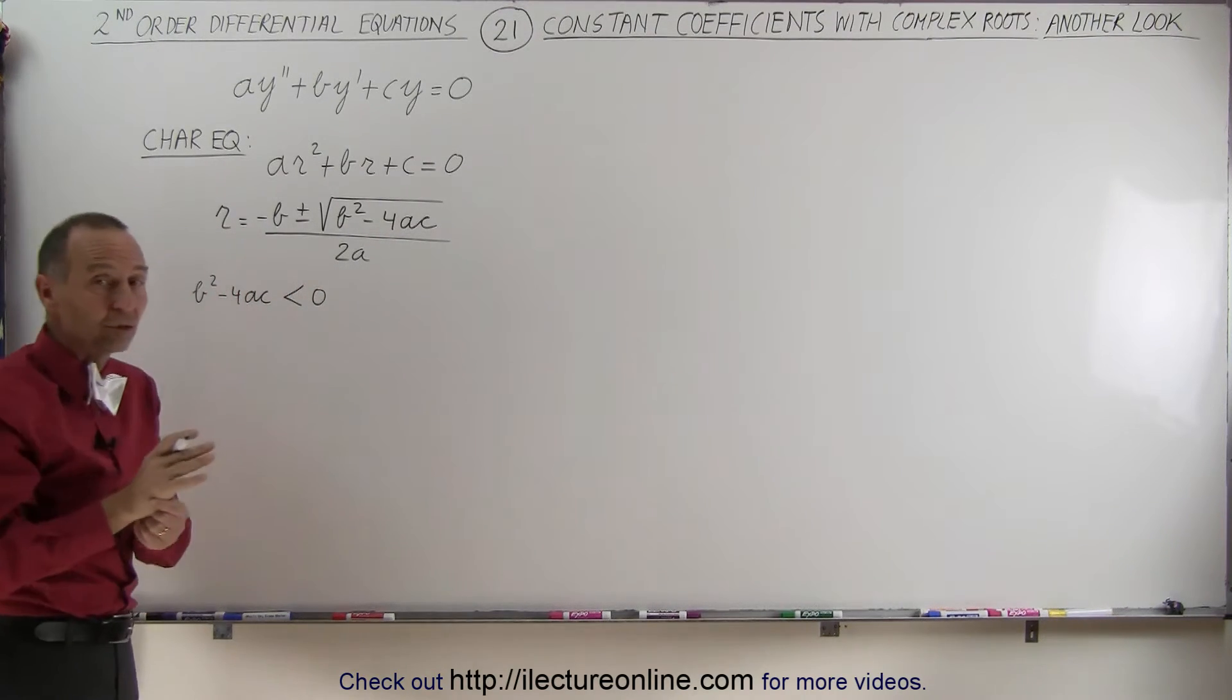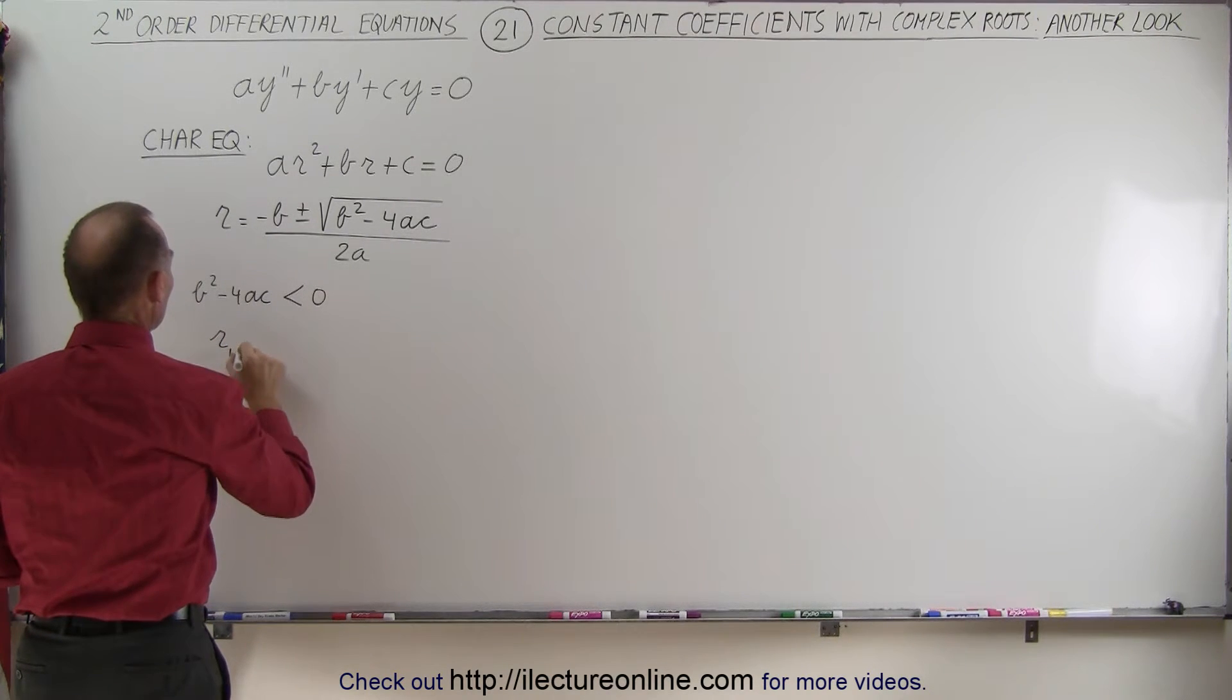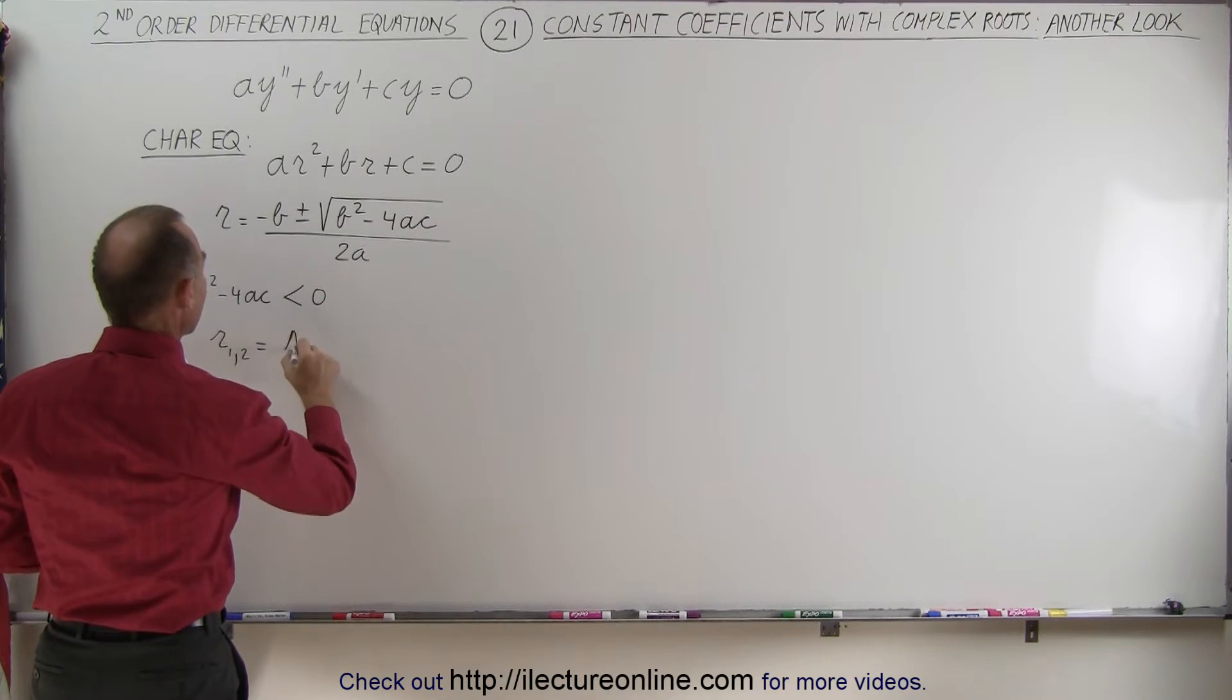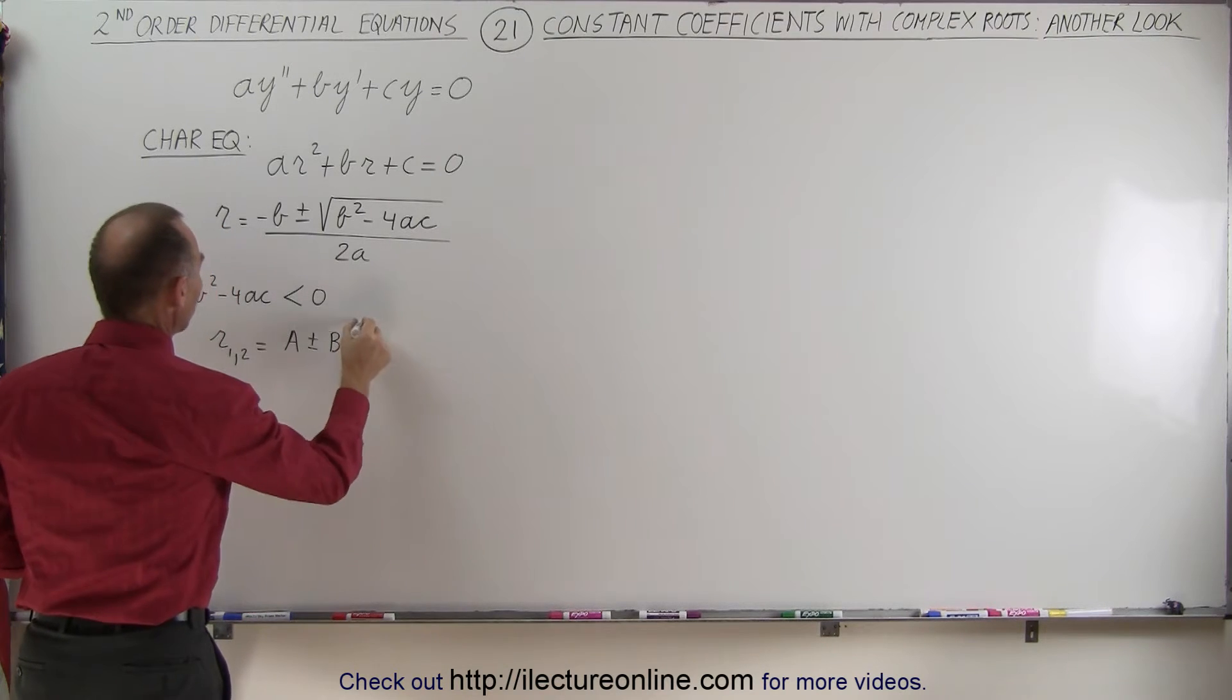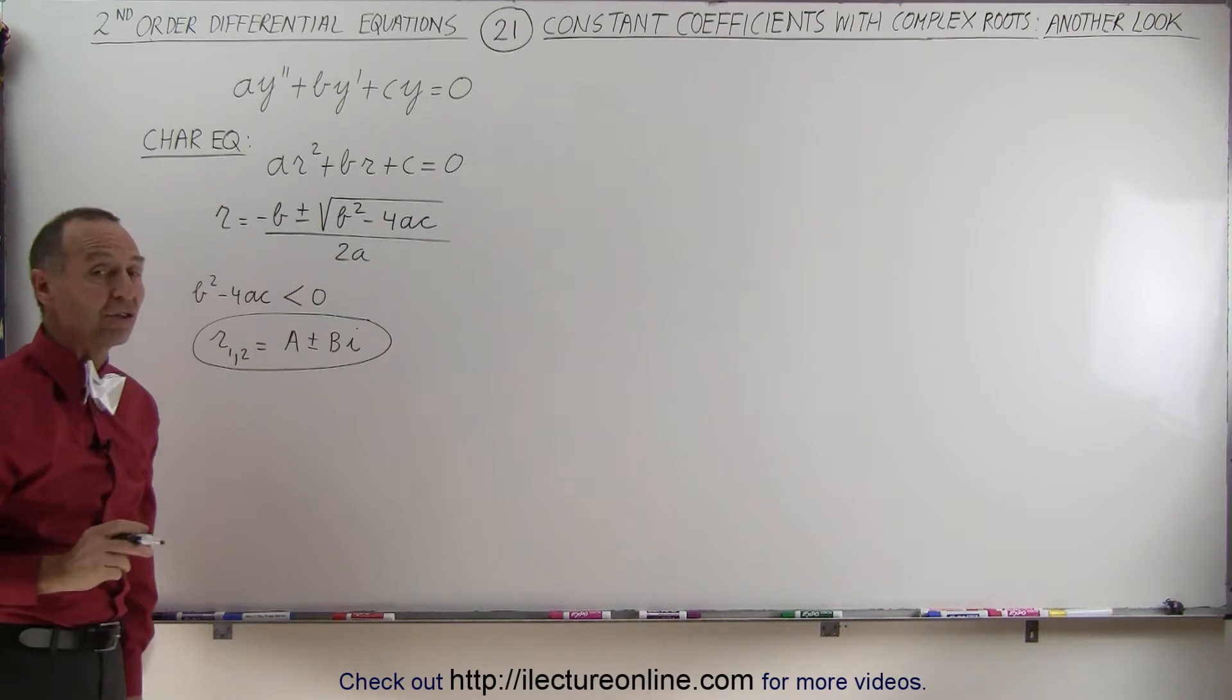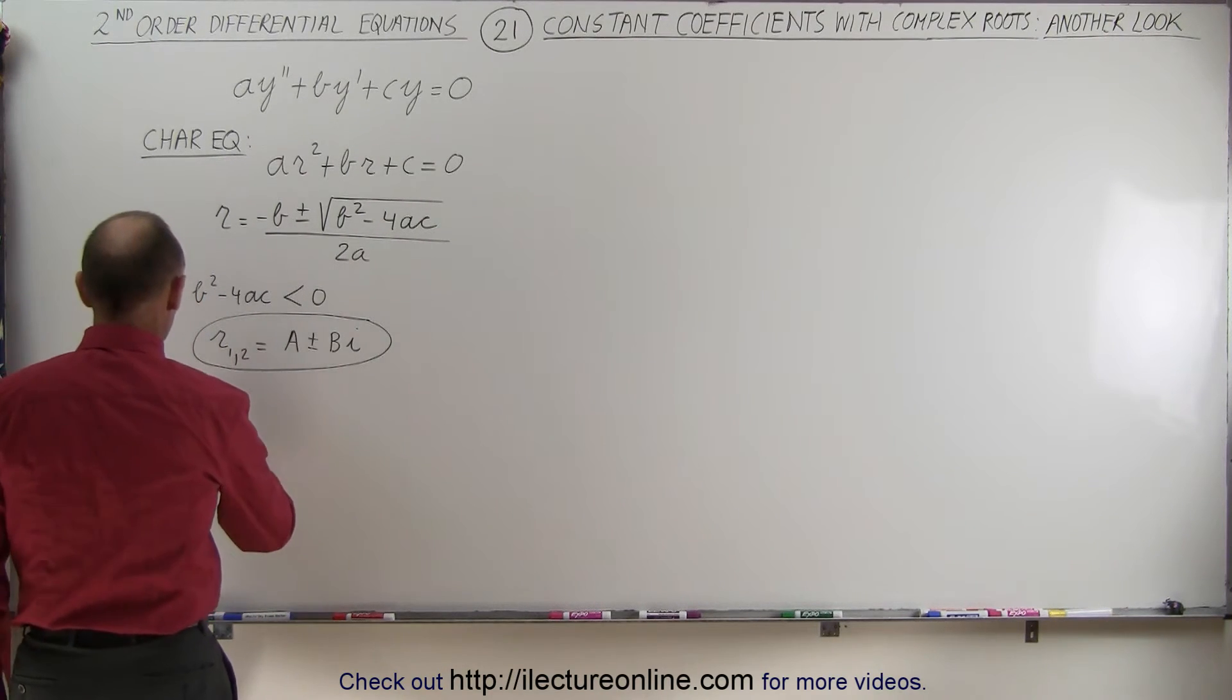If that is the case, the roots will be imaginary, and then you can write the roots as follows. Roots 1 and 2 is going to be equal to a plus and minus b i. So that would be the general form of the two roots, which are now imaginary. So this will give us a solution to the general equation as follows.